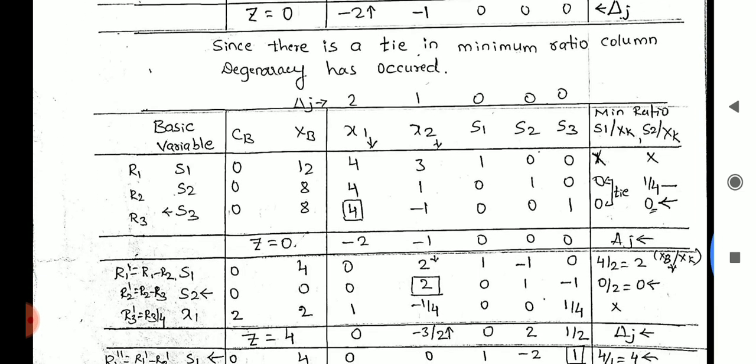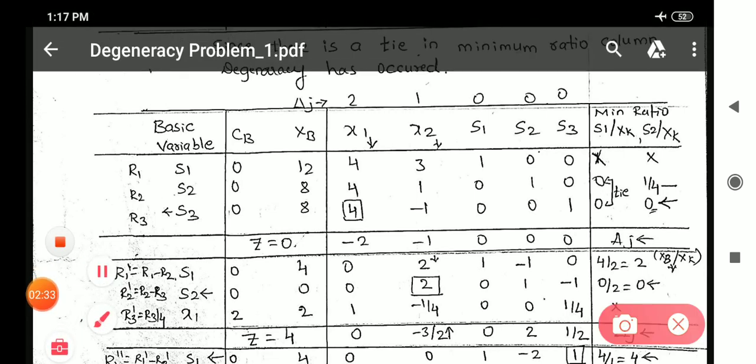In the next table, we should consider the same values as that of previous step. The only change should be there in this formula of minimum ratio. If you observe, minimum ratio formula is I have written it as s1 divided by xk instead of xb divided by xk. Since there was a tie, I am changing the formula of minimum ratio to s1 divided by xk. And I will not calculate minimum ratio value for first row because it was eliminated in the previous step itself.